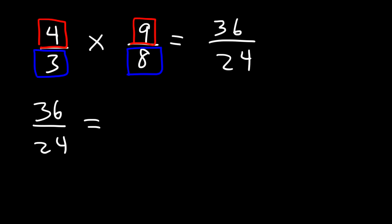24 and 36 are multiples of 12. 12 times 3 is 36. And 12 times 2 is 24. So it really helps to know your multiplication tables. So at this point we can cancel our 12. And so the final answer is going to be 3 over 2.